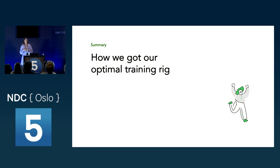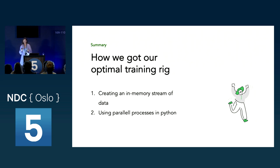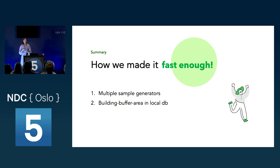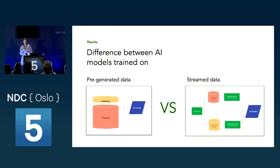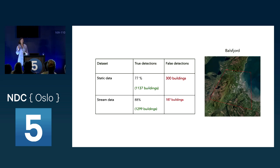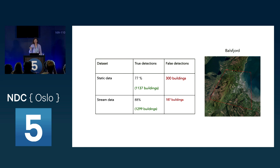To summarize how we got our optimal training rig: we created an in-memory stream of data, used parallel processes in Python, added multiple sample generators, created a building buffer area in a local SQLite database for fast tile filtering, and allowed reuse of data. Looking at the difference in Balsfjord: true detections increased from 77% to 88%, and false building detections dropped to 187. A good improvement, even though we want it even better.